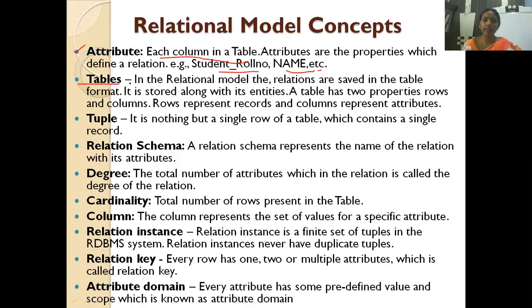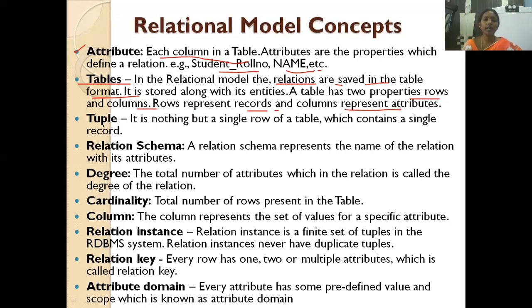Next is table. In a relational model, relations are saved in table format along with their entities. A table has two properties: rows and columns. Rows represent records, and columns represent attributes.